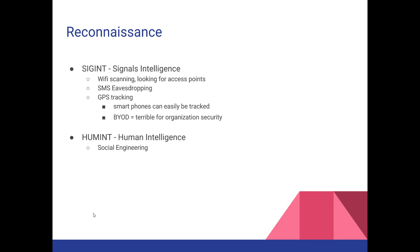Signals intelligence (SIGINT) involves Wi-Fi scanning — the classic term is war driving — looking for any access points in the area. SMS eavesdropping is often illegal but may be allowed per target; you have to be careful not to do it to people outside the scope and should always seek permission. GPS tracking is another useful tool — if people have location services on, they may have a noisy mobile device, and smartphones can often easily be tracked. That is yet another reason why bring-your-own-device is terrible for organizational security.